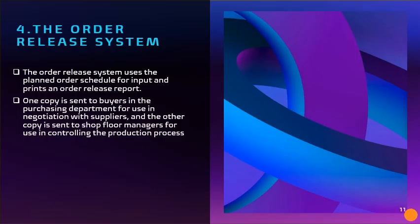The fourth is the order release system. It uses the planned order schedule as input and prints out an order release report. One copy is sent to buyers in the purchasing department for use in negotiation with suppliers, and the other copy is sent to shop floor managers for use in controlling the production process and inventory management.